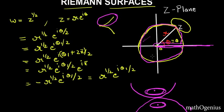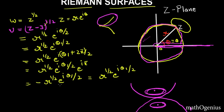Now let me show a function whose branch point is not at the origin. For example, w = (z − 3)^(1/2). Then 3 is the branch point. No matter how you rotate around the origin, nothing will change. But the function will change when you rotate around the point 3 on the real axis.